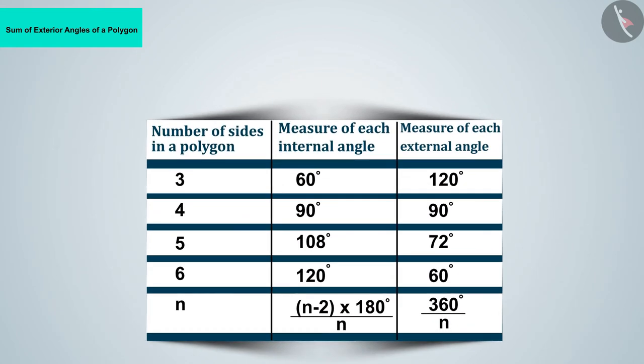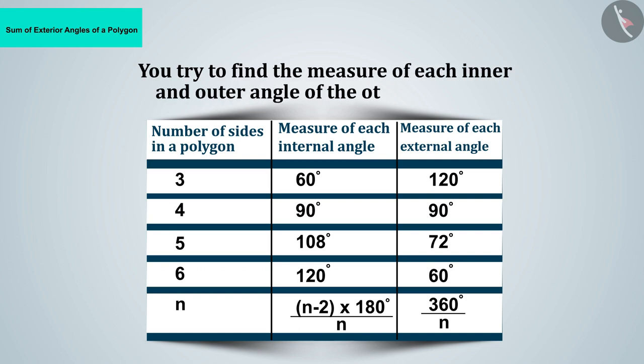We can confirm this by the formula related to the interior angles of polygons and the formula related to the external angles of polygons. You try to find the measure of each inner and outer angle of the other polygons.